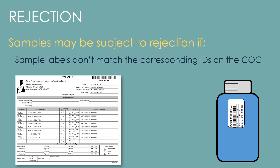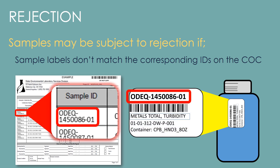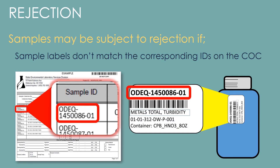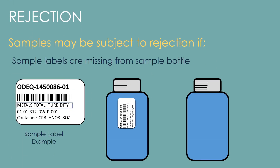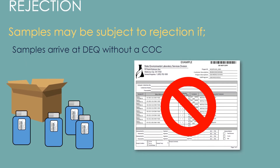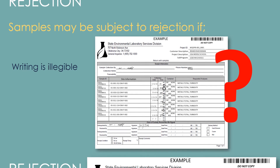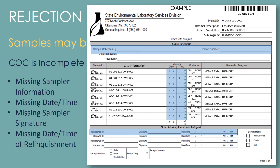If protocol is not followed, samples may be subject to rejection. This includes: sample label IDs did not match the IDs on the chain of custody, sample labels are missing, samples arrive without a chain of custody, writing is illegible, or chain of custody is incomplete.